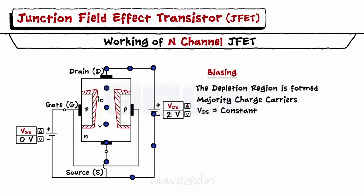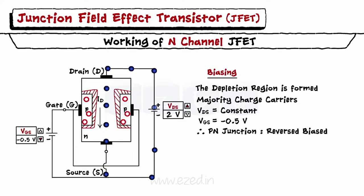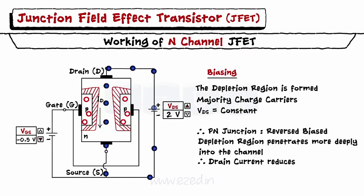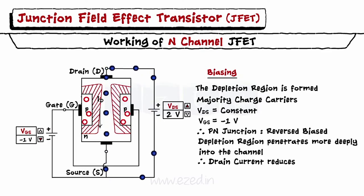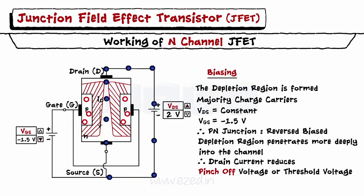Let's keep the VDS constant and apply some gate to source voltage. The P region contains holes. Applying a negative voltage to the gate makes the PN junction reverse biased. The depletion region width increases and it penetrates more deeply into the channel, decreasing the channel width and thus the drain current reduces. If we increase the gate voltage towards a more negative side, the depletion region goes on increasing, and a point comes when the channel gets depleted completely. The value of VGS at this point is called as the pinch-off voltage or threshold voltage, and the current flow stops.